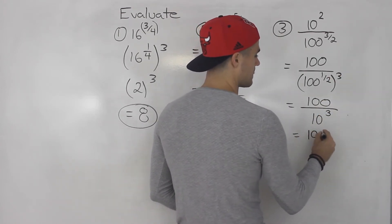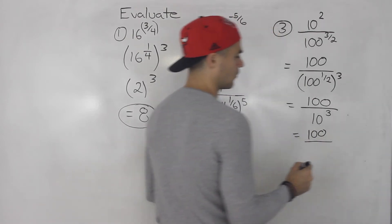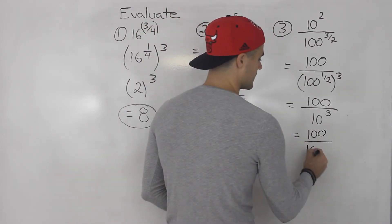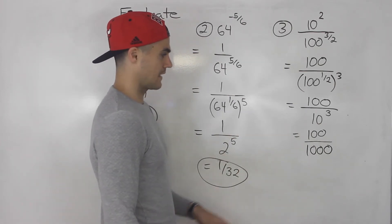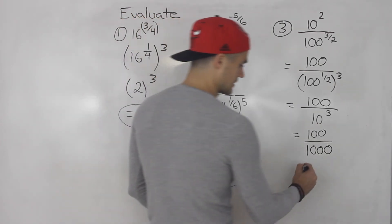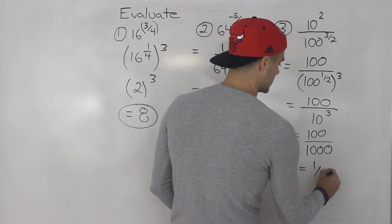10 to the power of 3 is what? 1,000, right? 10 times 10 times 10 is 1,000. And then 100 over 1,000, that's just equal to 1 over 10.